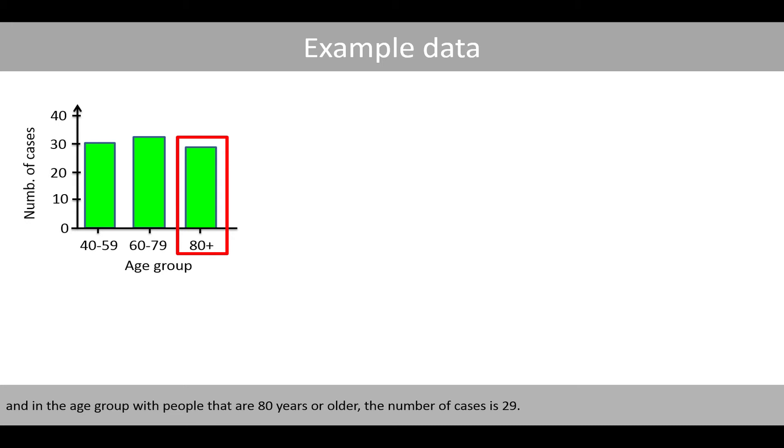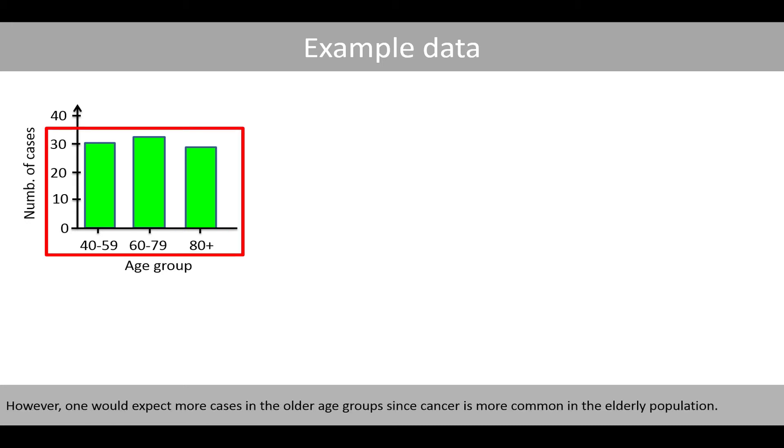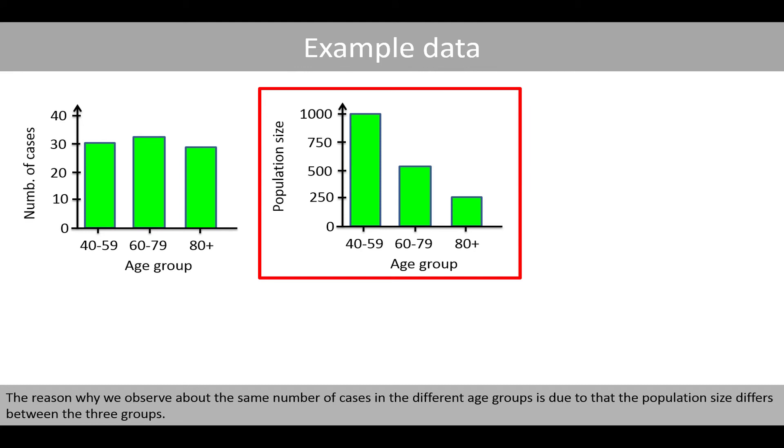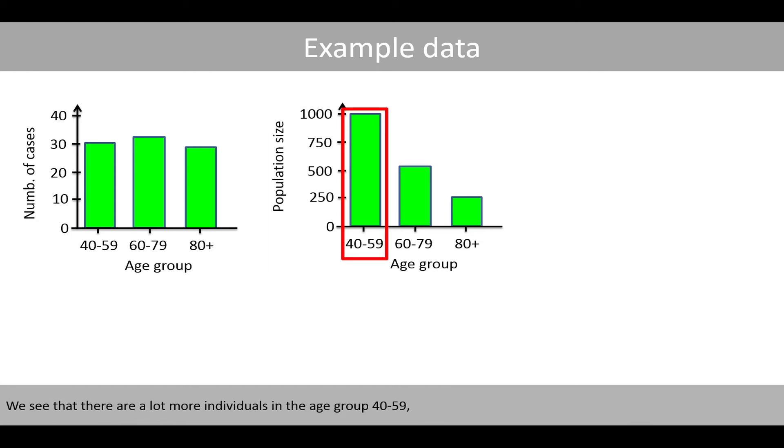However, one would expect more cases in the older age groups since cancer is more common in the elderly population. The reason why we observe about the same number of cases in the different age groups is due to that the population size differs between the three groups. We see that there are a lot more individuals in age group 40 to 59 compared to the age group 60 to 79.